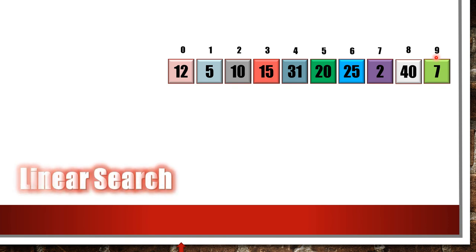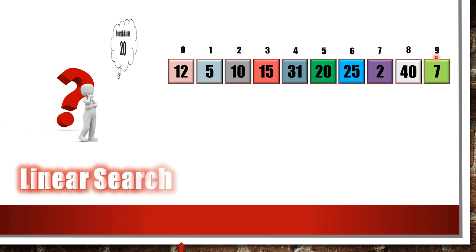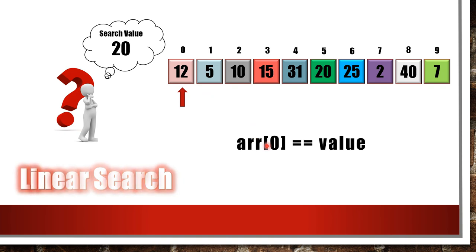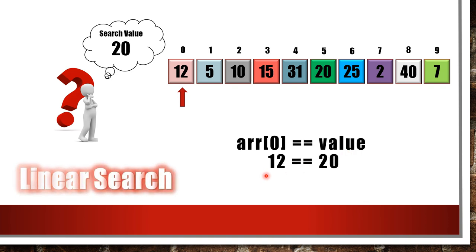Now we are going to search for a value — for instance, the search value is 20. We start with the first element. The position value is 0, so if the array variable is ARR, ARR[0] will be compared using the equality operator with the value to be searched, which is 20. So you check 12 == 20, and since it is not equal, you get a false response.